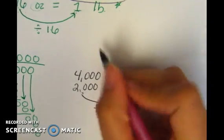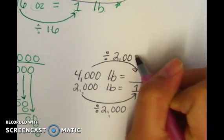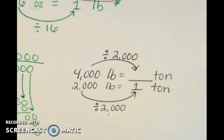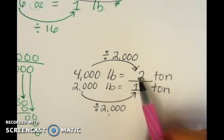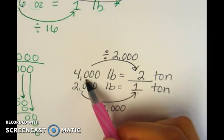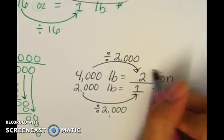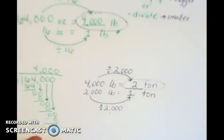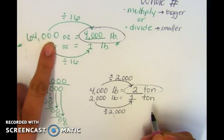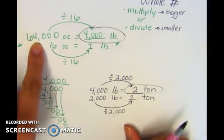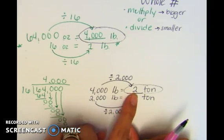If I do it down here, I need to do the same thing to my top numbers. So I need to divide 4,000 by 2,000. And I know my answer will be 2, because 2 groups of 2,000 equals 4,000. Now that I've converted 2 times, this is my answer. I know that 64,000 ounces is the same thing as 4,000 pounds, and that is the same thing as 2 tons.